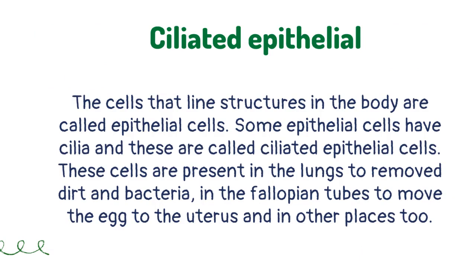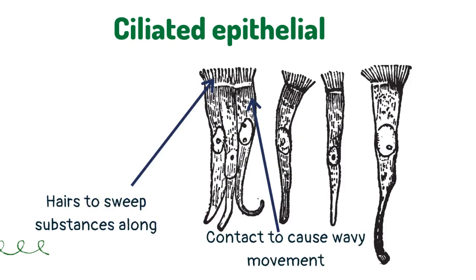Ciliated epithelial cells are also found in the fallopian tubes to move the egg to the uterus, and in other places too. These cells have hair-like structures to sweep substances along. Fibers in the cell contract to cause the cilia to sway and push the substance along.